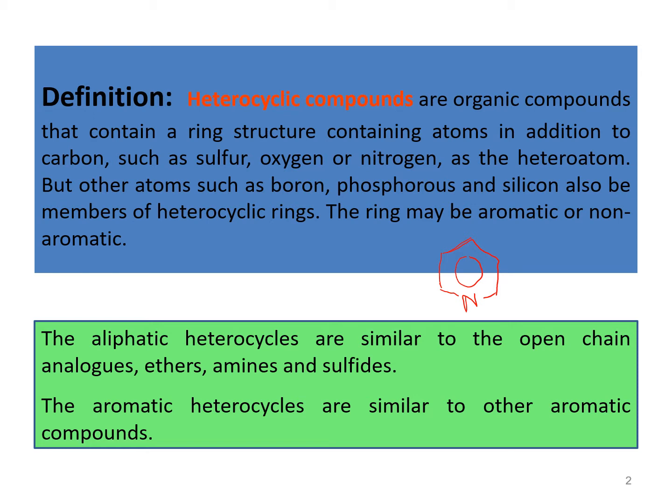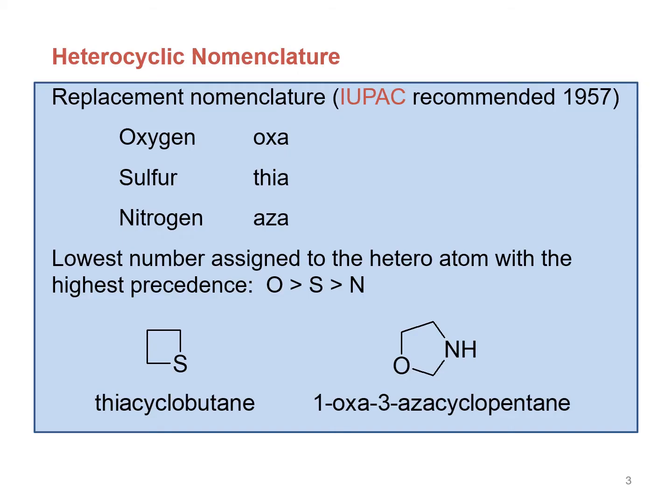The nitrogen in pyridine is known as the hetero atom. The aliphatic heterocycles are similar to the open-chain analogues — ethers, amines, and sulfides. The aromatic heterocycles are similar to other aromatic compounds.